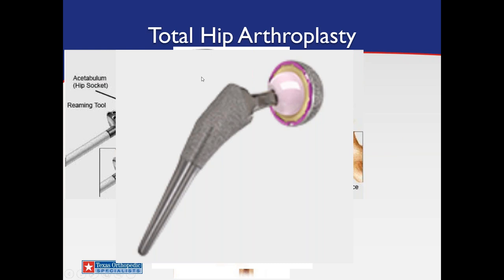I mentioned earlier that we like to put off surgery until patients are over 50 because this liner is made out of plastic. Although it's the gold standard for liners in the United States right now, it doesn't last forever. We think those liners last about 15 to 20 years — they were reworked about 15 years ago. At this point I feel confident estimating a 15 to 20-year lifespan on a total hip replacement, as long as there's no other complication.